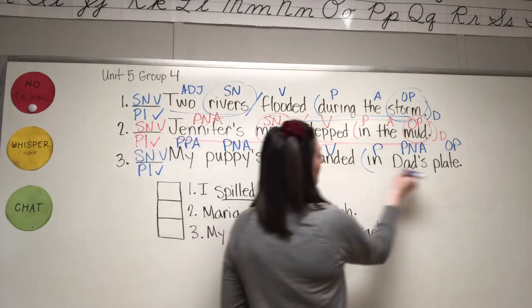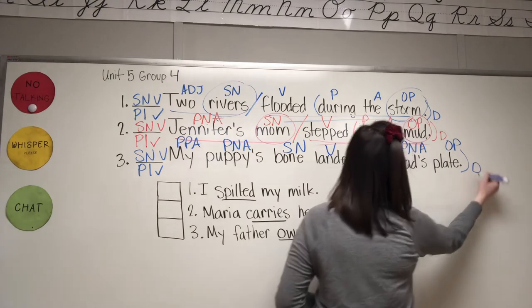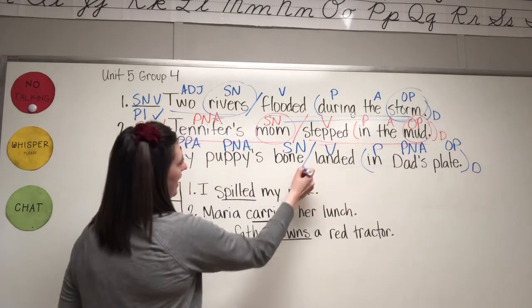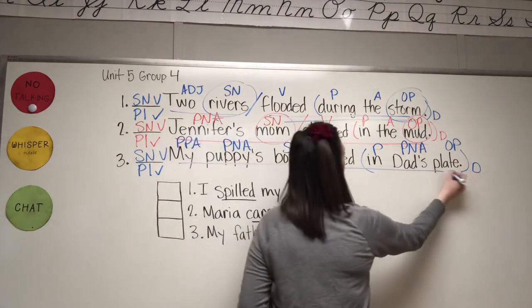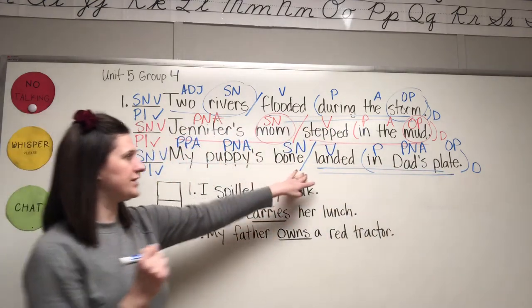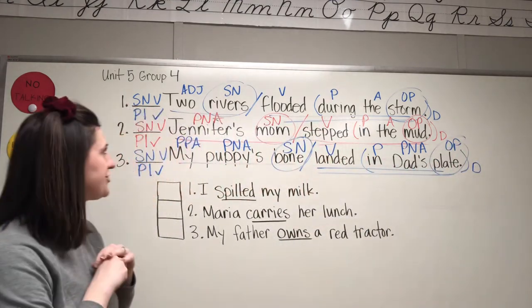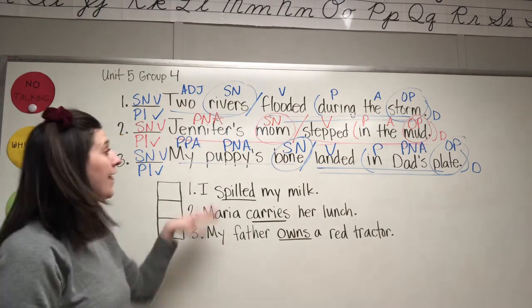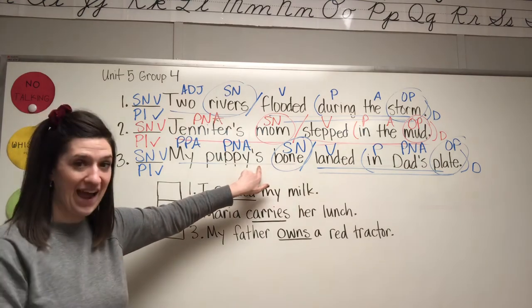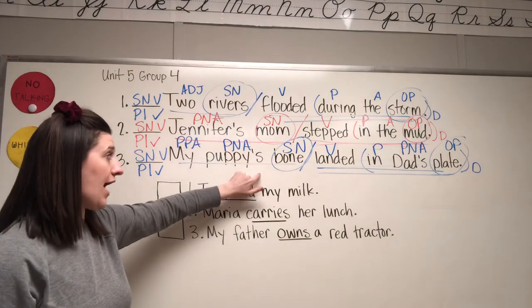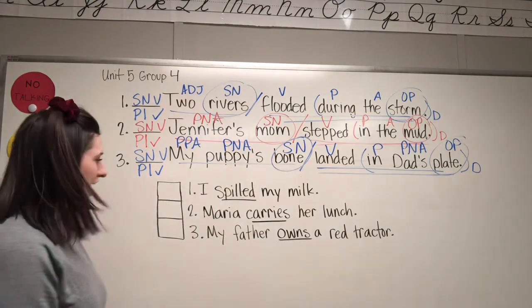In dad's plate — prepositional phrase. Period. Statement, declarative sentence. Go back to the verb and divide the complete subject from the complete predicate. Bone landed. Bone and plate are the two nouns. Just a quick reminder: if you see an apostrophe S, that means it's a possessive noun adjective — apostrophe S, P-N-A.